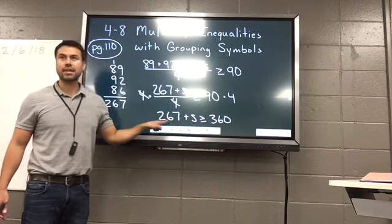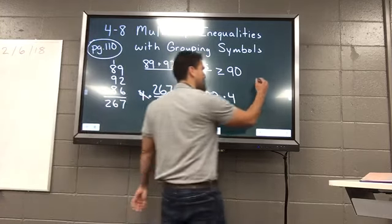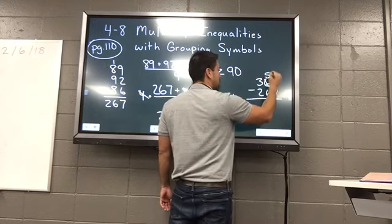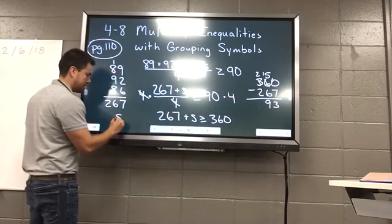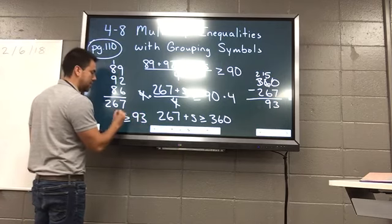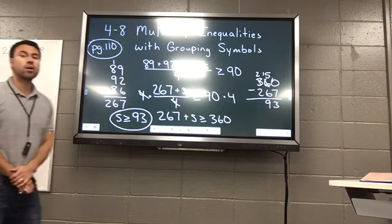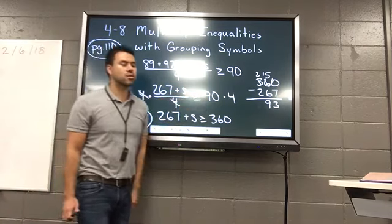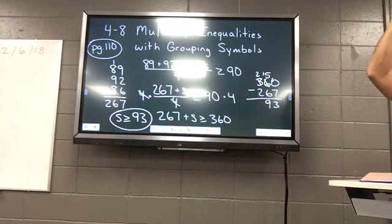What's still happening to S that I want to undo? They're being added, so what undoes addition? Subtraction. So what do I subtract both sides by? 267. So really, I'm trying to figure out, what's 360 minus 267? So I get S is greater than or equal to 93. Does anyone know what that means for this person who wants at least a 90 in the class? A 93 or above in order to get a 90 for their class.